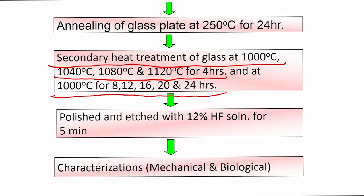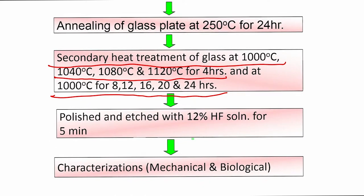Glass ceramic materials are extremely interesting because, like metallic materials, you can schedule different heat treatment conditions to get a variety of microstructures — and those microstructures are often really fascinating. To summarize, we have done two types of heat treatment: one varying temperature at a constant heat treatment time of 4 hours, and another at constant temperature with different heat treatment times.